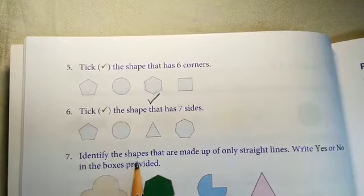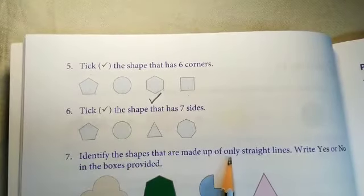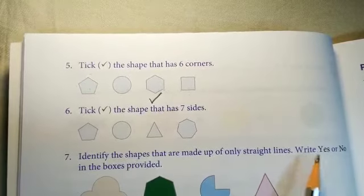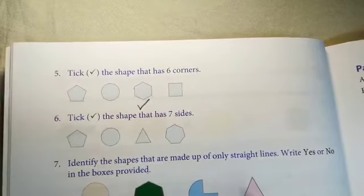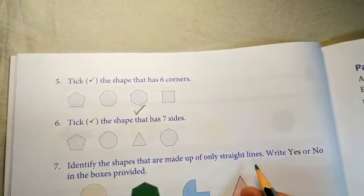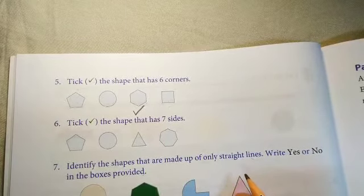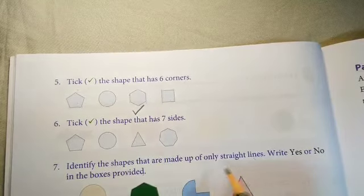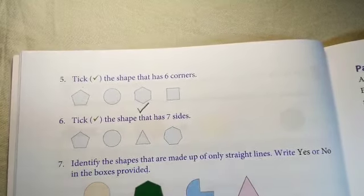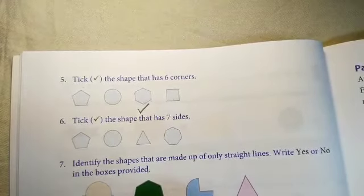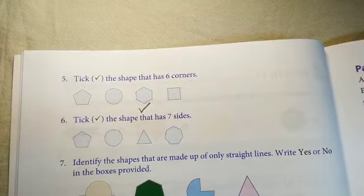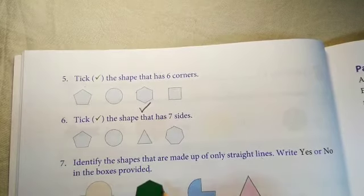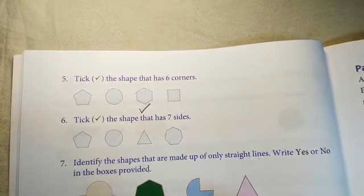Question number 7. Identify the shapes that are made up of only straight lines. Write yes or no in the boxes provided. Mind it students, here we have to identify the shape that is made up of only straight lines. The first shape we cannot find any straight line. We will write no. Shape number 2, which is made up of straight lines. We will write yes.